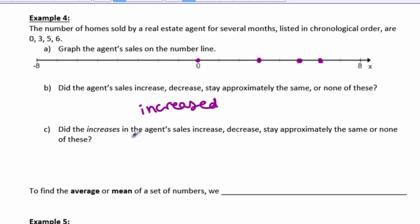Did the increases in the agent's sales increase, decrease, stay approximately the same, or none of these? The increases, you can see how large each of these increases is, by the space between the numbers. The increases actually decreased. The size of each increase decreased.